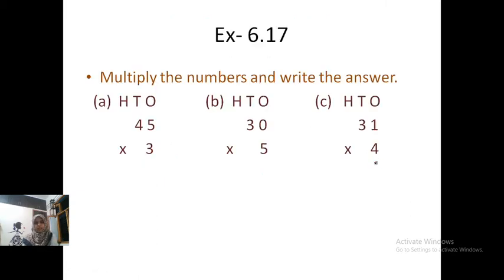Next. Multiply the numbers and write the answer. 3 x 5. First of all, we multiply 1. 3 x 5 is 15. So I write here 5 and 1 carry. 3 x 4 is 12 plus 1. 12 plus 1 is equal to 13. So 45 x 3 is equal to 135 is our answer.